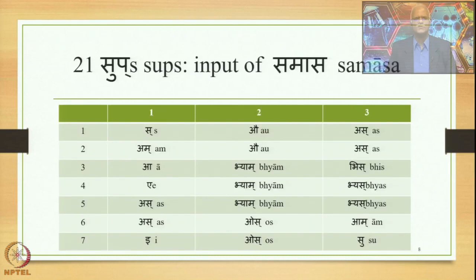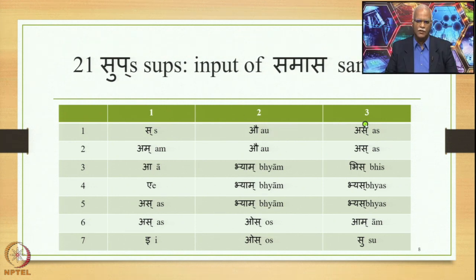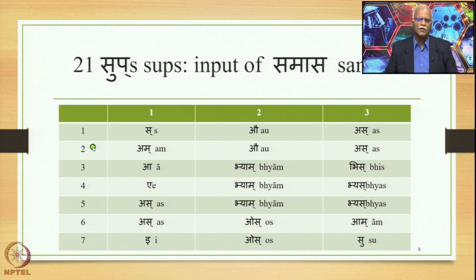Here is a list of sups. These are the 21 sups divided into three columns and seven rows. Each column represents number: one represents Ekavachana (singular), two represents Dvivachana (dual), and three represents Bahuvachana (plural). This is the significance of the numbers in white. The numbers in black represent seven rows, each representing what is known as a Vibhakti.